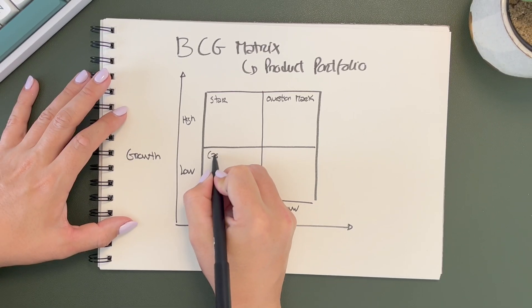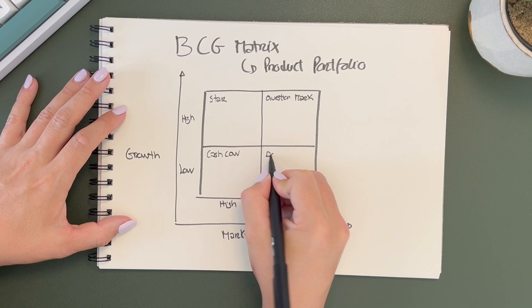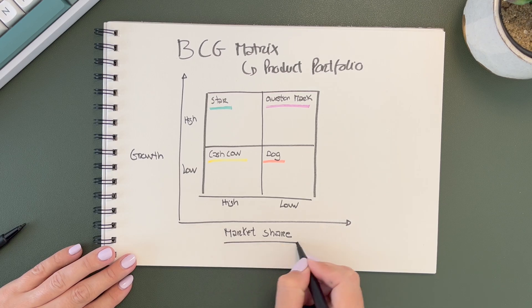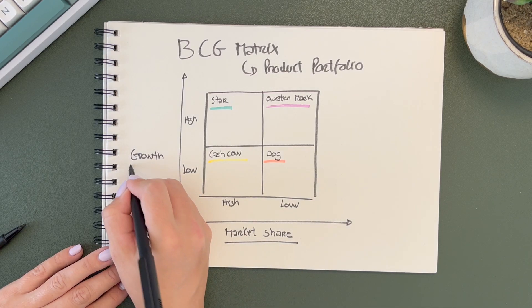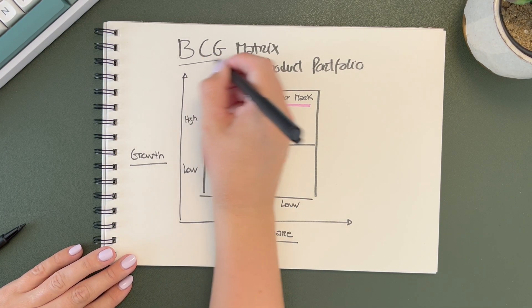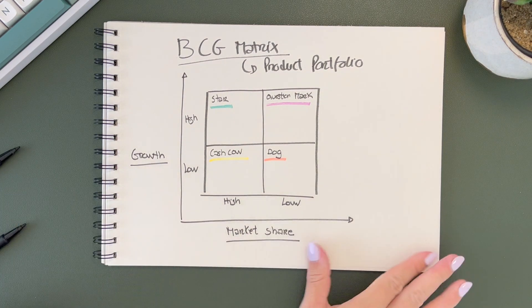There are many matrix-based frameworks out there. Number one, the BCG matrix, also known as a product portfolio matrix, takes market share and product growth as its decision criteria to help companies formulate strategies about the direction of their products or business units.